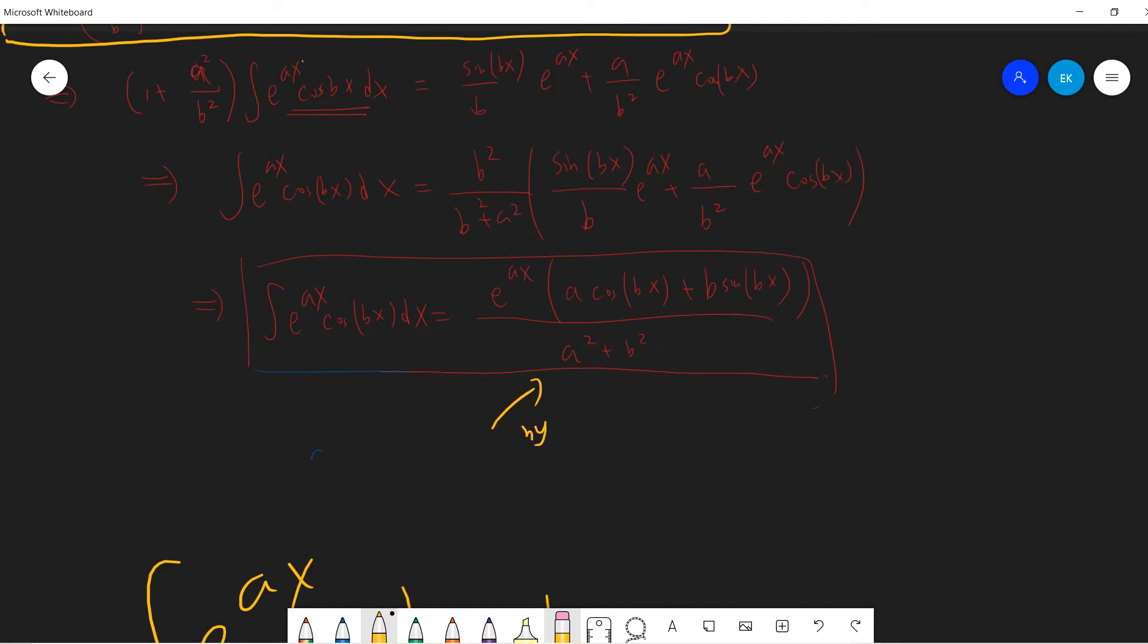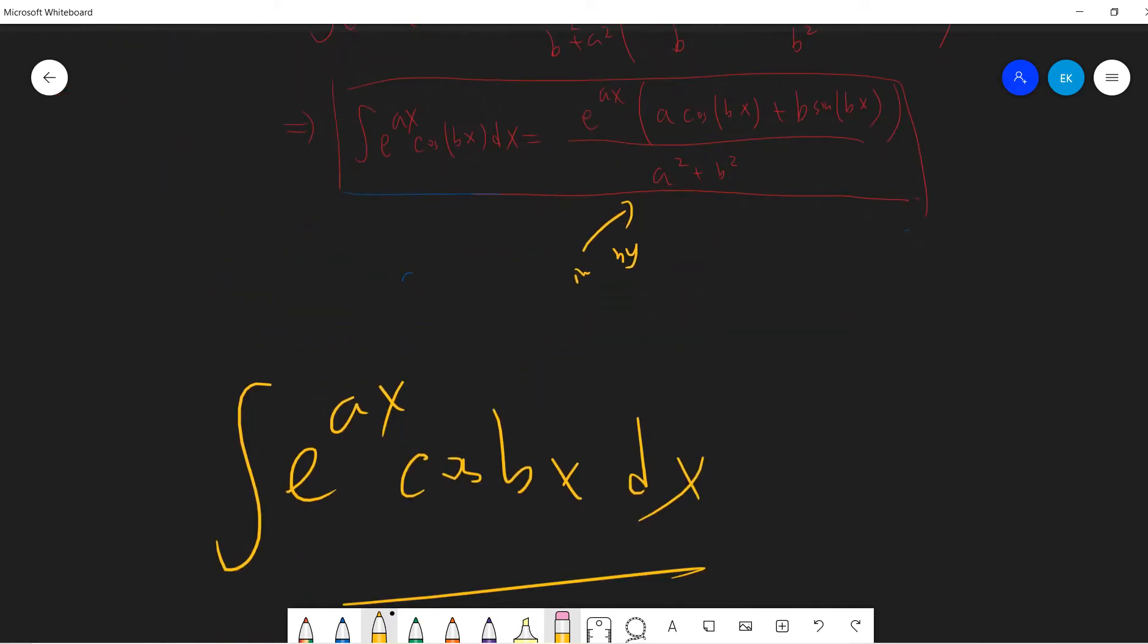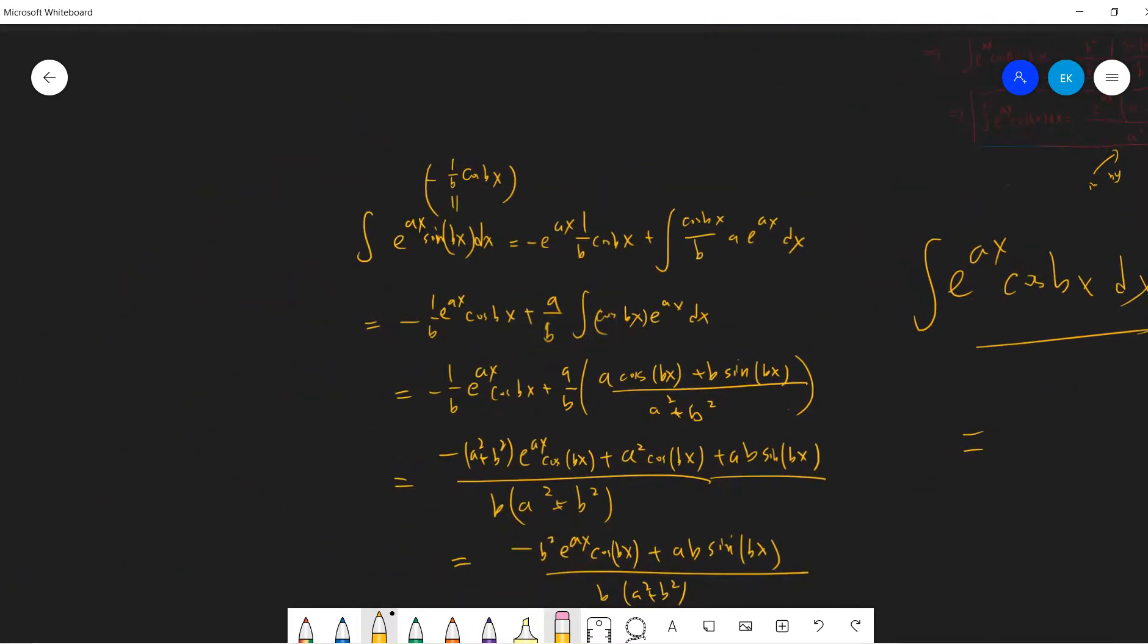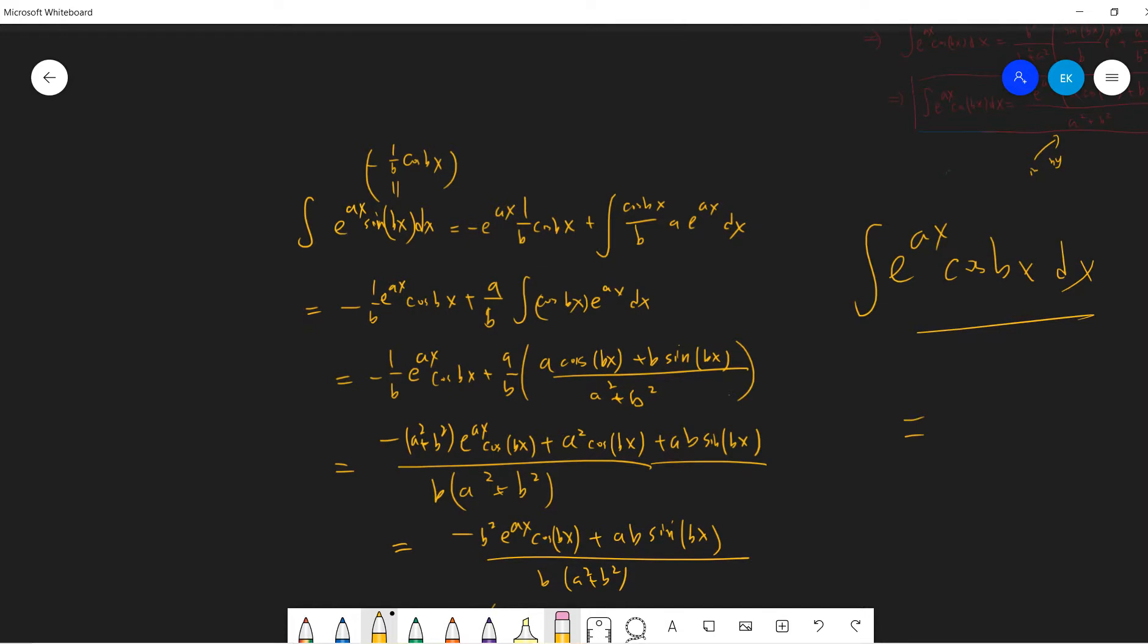So we use the integration by part. This time we are just going to use these results and easily calculate another partner. The partner is exponential ax sine bx dx. So this is very famous in calculus.